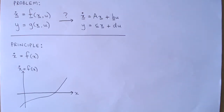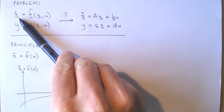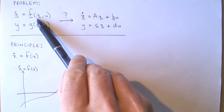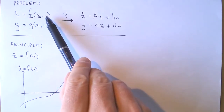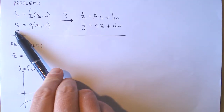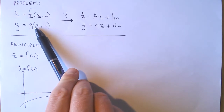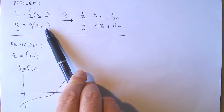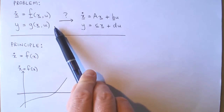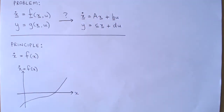The problem we want to solve with linearization is the following. Suppose we have a system whose dynamics is described as differential equations that are non-linear in the states and the input, and the output is described as an equation that is non-linear in terms of the states and the input. We want to approximate this non-linear system with the normal linear state variable equations.